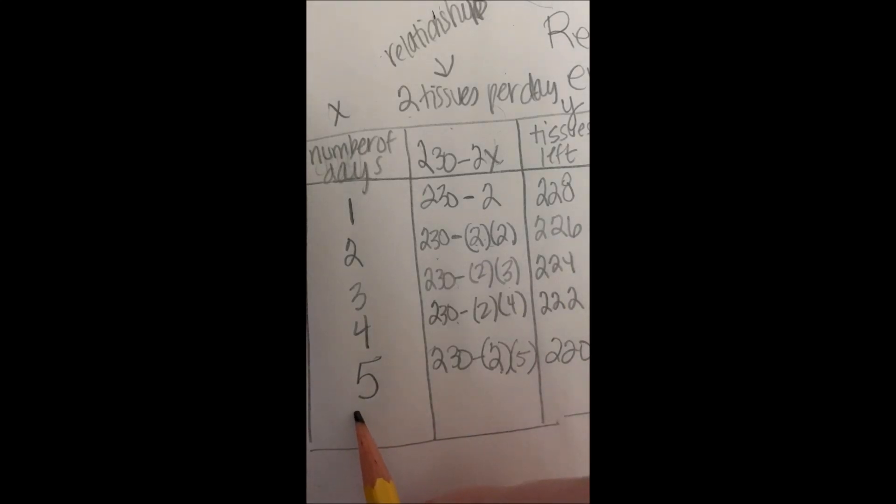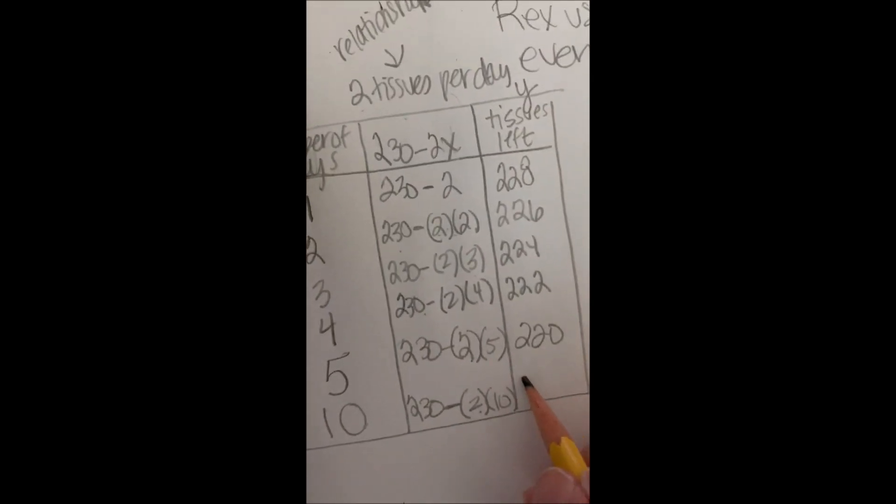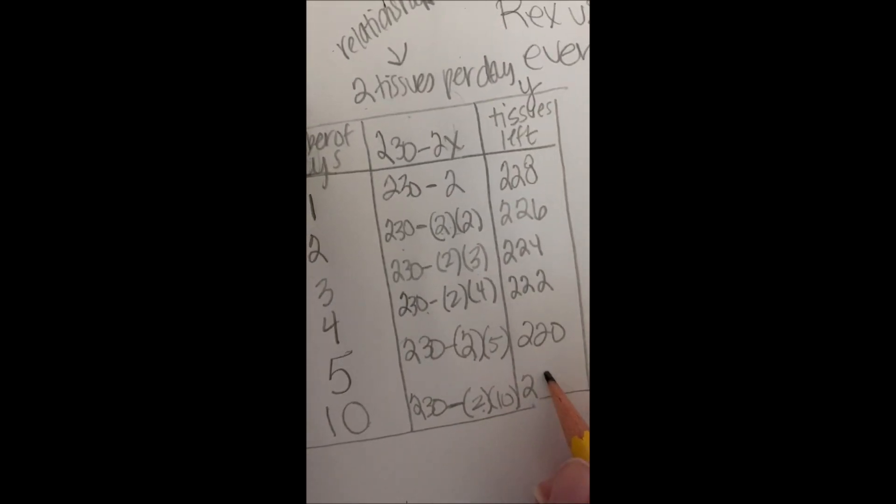So no matter how many days it is, let's do 10. 10 days of using two tissues a day. 230 tissues minus two per day times 10. So 230 minus 20 gives me 210 tissues left.